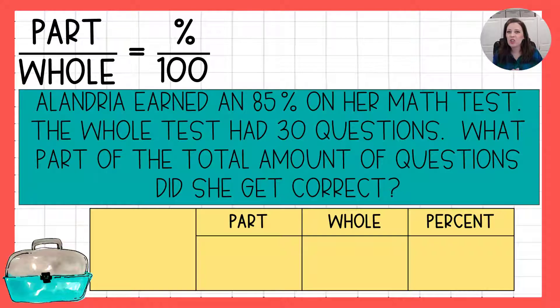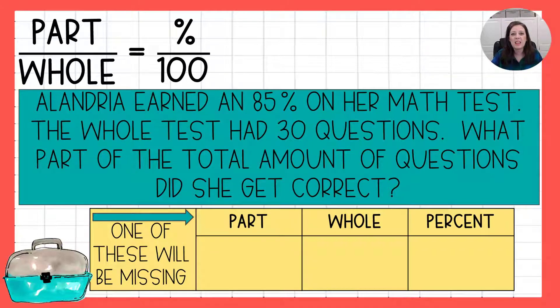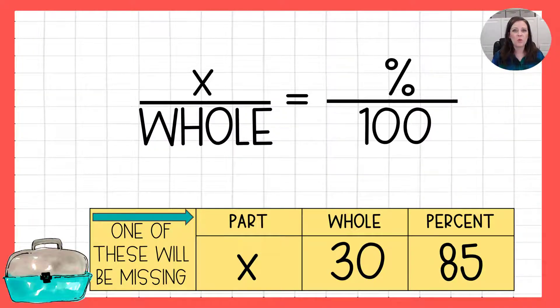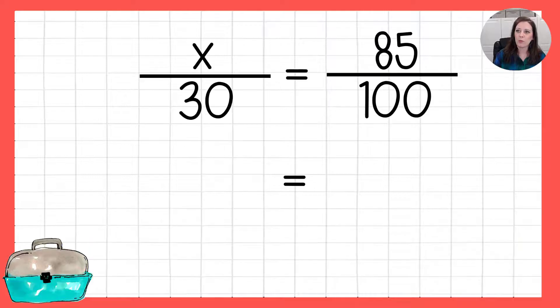Next problem is about Alandria. She earned an 85% on her math test. The whole test had 30 questions. So what part of the total amount of questions did she get correct? Alright. So again, something's missing. Our part. How many questions did she get correct? That is what we don't know. So that's our x. The whole, how many questions were on this test? 30. And then the percent, we know Alandria made an 85%. So we take that, we plug it into our favorite proportion here, and we are ready to cross multiply.